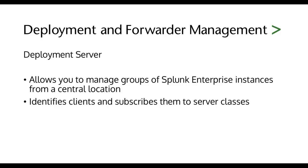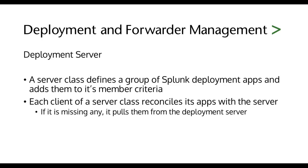It identifies clients and subscribes them to certain server classes. If you have used other automation tools like Chef or Puppet, you're familiar with this type of model. And by the way, you can use Chef or Puppet to do the same thing. A server class defines a group of Splunk deployment apps and adds them to its member criteria. Each client of a server class reconciles its apps with the server, so if it's missing any, it pulls them from the deployment server.